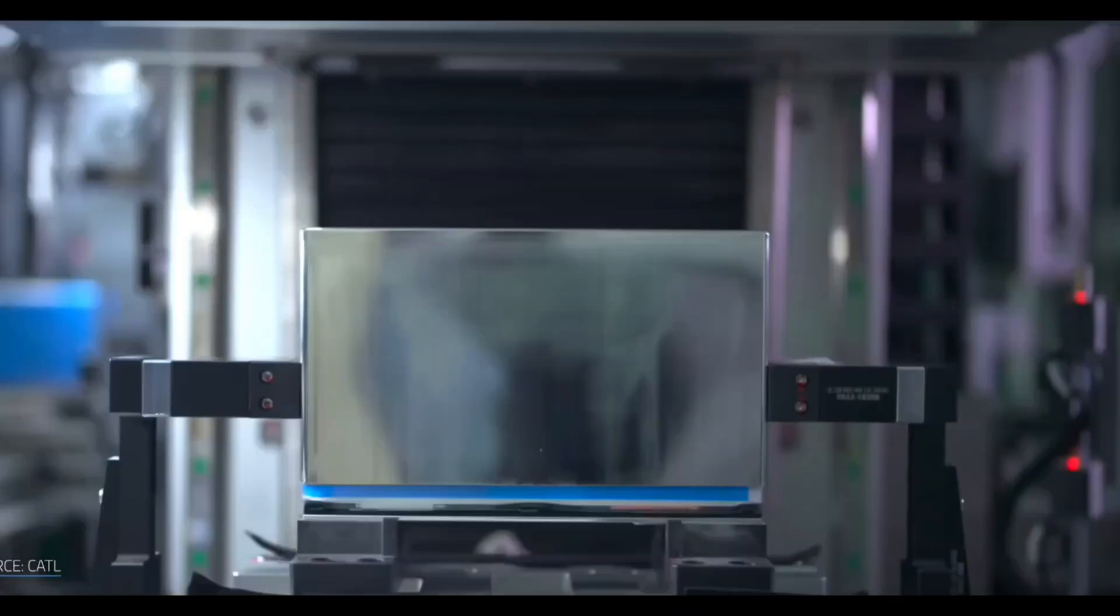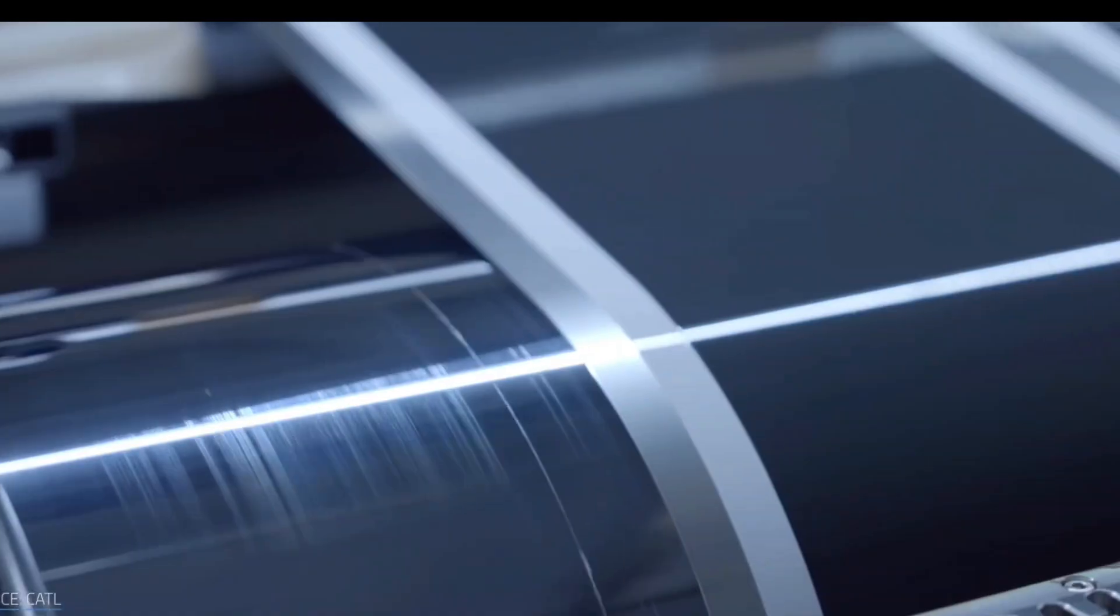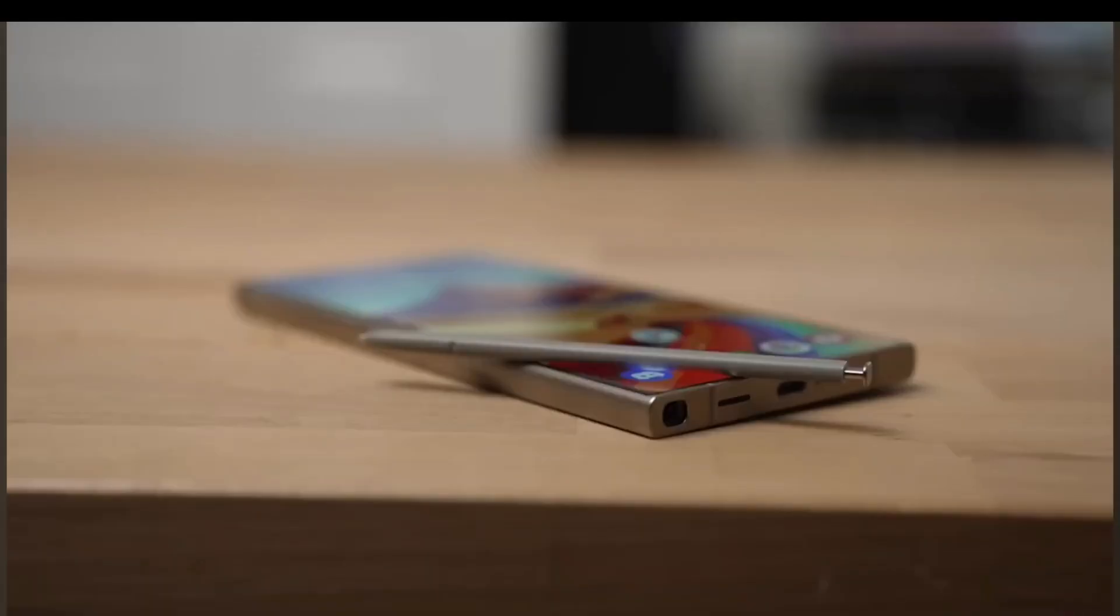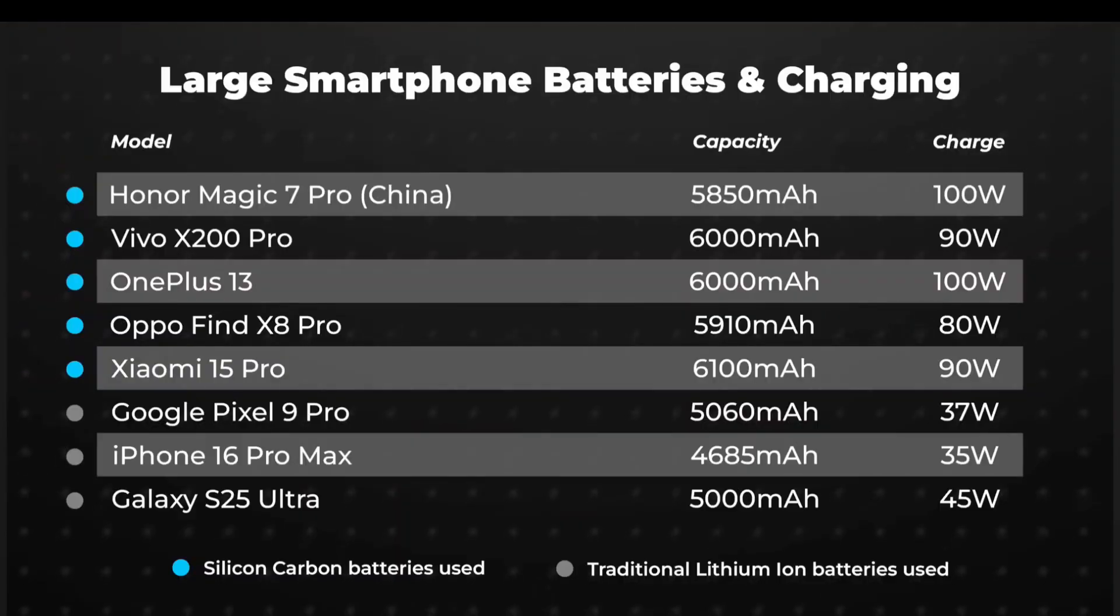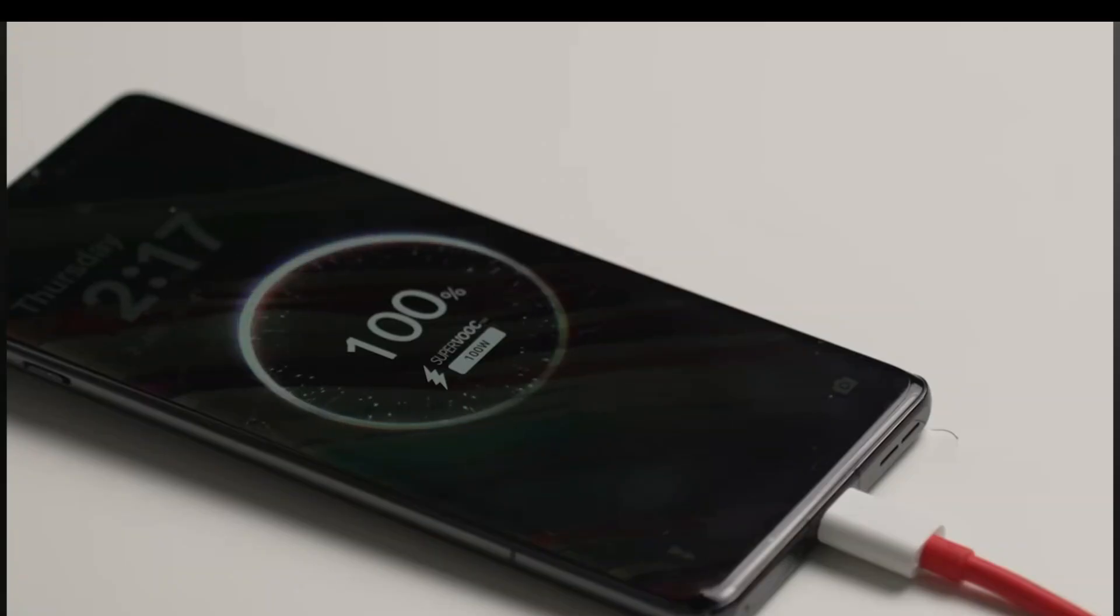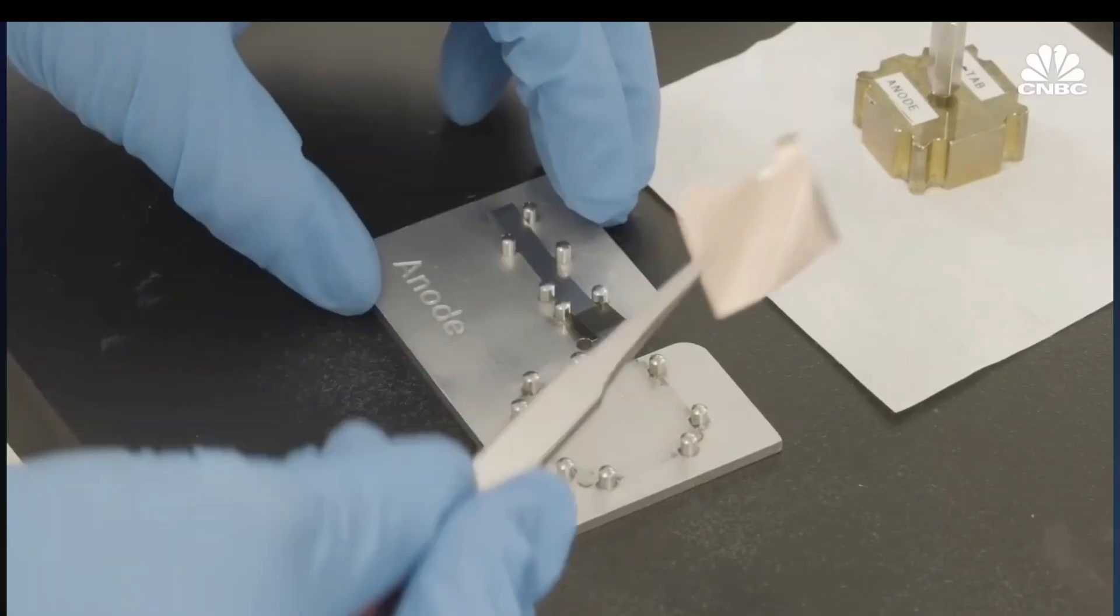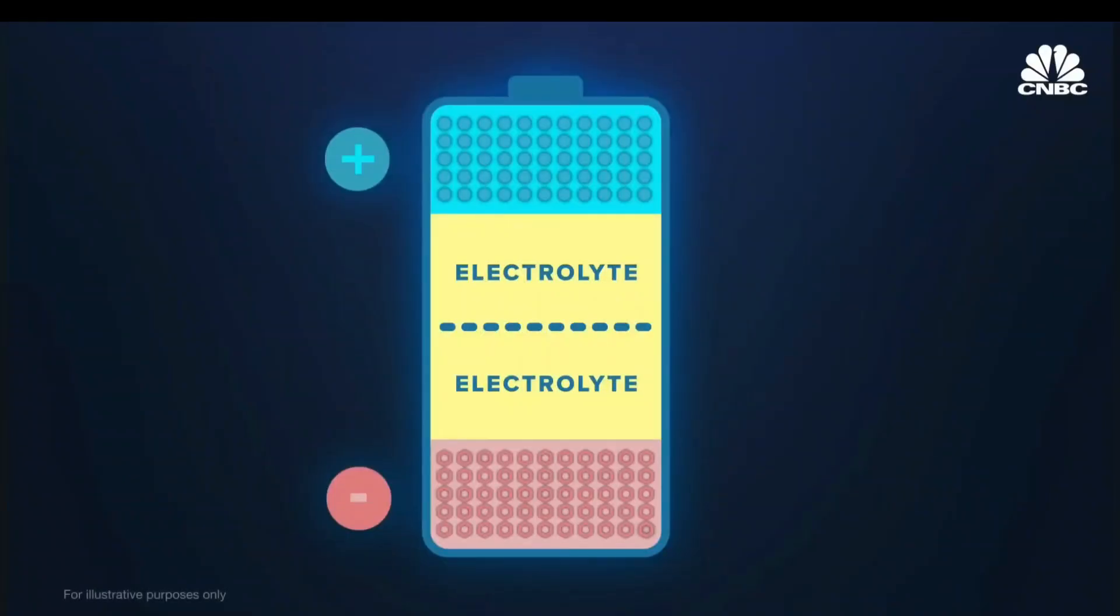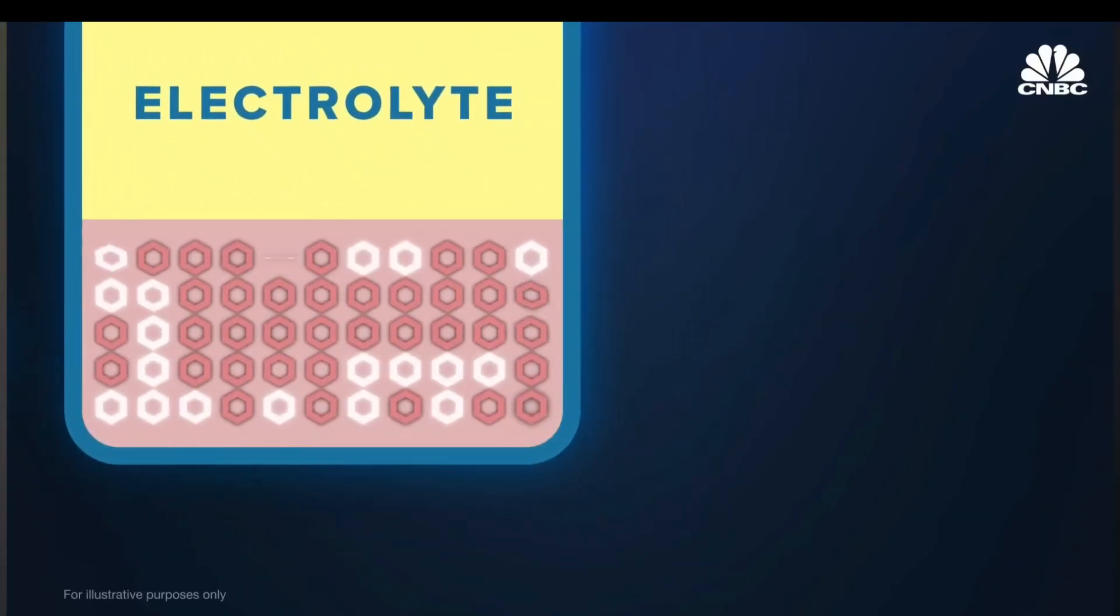So what are they doing instead? Samsung seems to be waiting, watching, testing. They know silicon carbon batteries have potential, but they also know the tech isn't fully ready. Most of the so-called fixes for swelling and safety, they're still in labs or small test runs, not proven in real-world smartphones. And Samsung? They don't just want something that works for a few months. They want something that can survive for years across millions of devices.